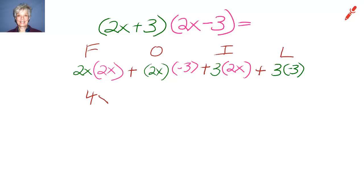Now I'll have 4x² plus negative 6x plus positive 6x plus negative 9. Look what happens to the negative 6x and the 6x: the middle terms disappear. So our final answer is going to be 4x² minus 9.